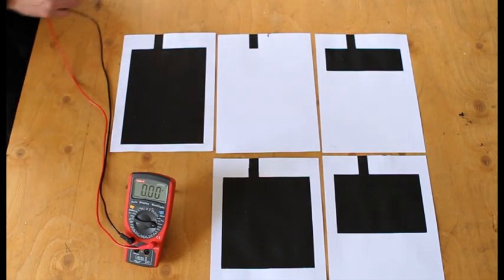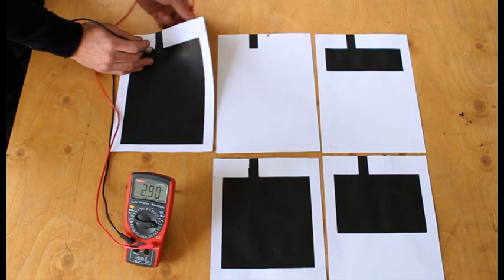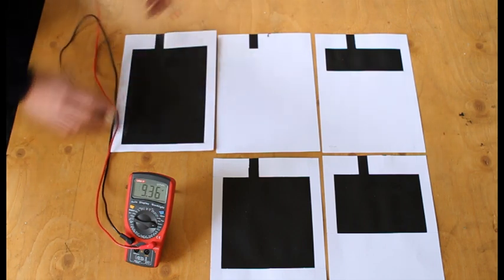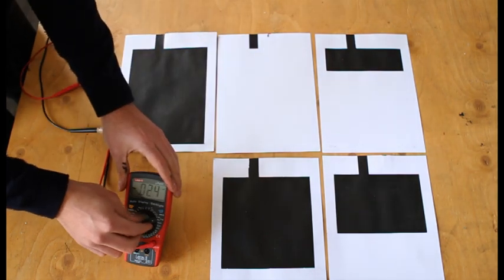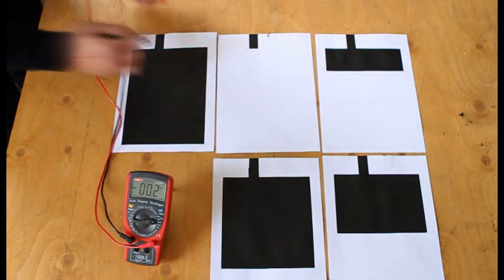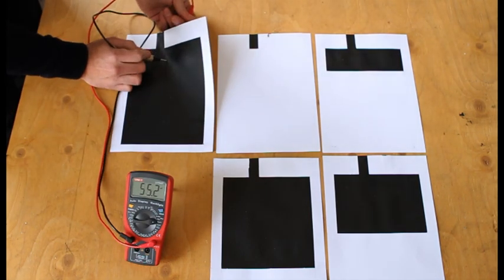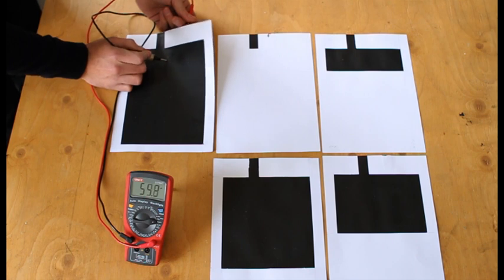Now I've got my multimeter here and all I have to do is set it to capacitance and touch each side of the capacitor. Of course I've got to get it on the correct scale first. So here we've got 55 nanofarads, something like that.